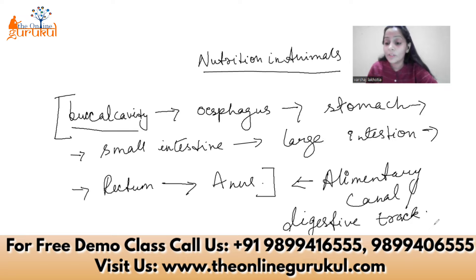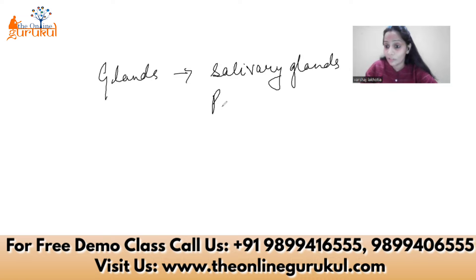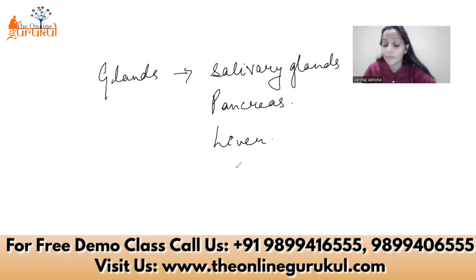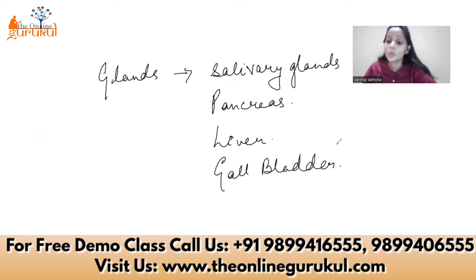We will be learning about each of these organs one after the other. Apart from the organs in our alimentary canal, we have certain glands also involved in digestion — salivary glands present in our mouth, the pancreas, the liver, and the gallbladder. All these organs and glands work together to help digest the bread, lunch, or dinner that we have eaten.